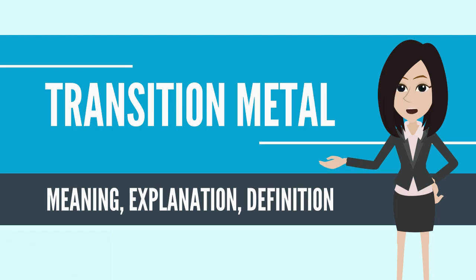English chemist Charles Berry (1890 to 1968) first used the word transition in this context in 1921, when he referred to a transition series of elements during the change of an inner layer of electrons — for example, n equals 3 in the fourth row of the periodic table — from a stable group of 8 to 18, or from 18 to 32. These elements are now known as the D block.